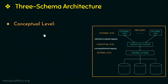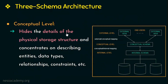The next level in our 3-schema architecture is the conceptual level. The conceptual level has a conceptual schema and this schema describes the structure of the database. This schema hides the details of the physical storage structure and focuses more on describing entities, data types, relationships, constraints, attributes, etc. These terminologies have already been defined in our earlier videos and will be useful further.